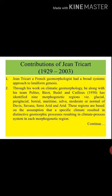glacial, periglacial, boreal, maritime, selva, moderate or normal (of Davis), savannah, semi-arid, and arid. These regions are based on the assumption that a specific climate resulted in distinctive geomorphic processes, resulting in a climate-process system in each geomorphic or morphogenetic region.